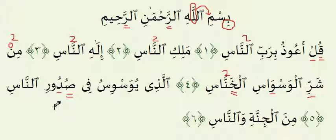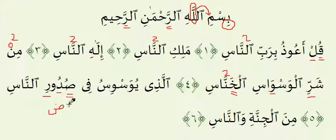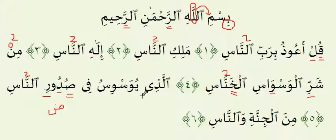If you accidentally make the Dal heavy, you will be reading it incorrectly — something like Daud. The Dal has to be nice and light. You're transitioning from a heavy letter, Suud, to a light letter, Dal. And then the Ra is light because it takes a Kasra. The Nun should be held for two counts of Ghunnah. The word waswas is also repeated here in this ayah.